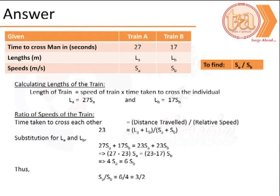We first begin by calculating the length of each train in terms of the time taken to cross the individual. The length of train A is 27 times SA, where 27 is the time taken to cross the individual. Similarly, LB would be 17 times SB.